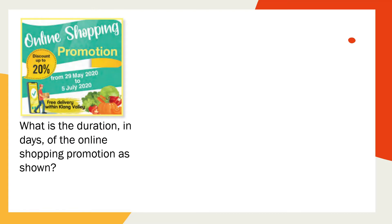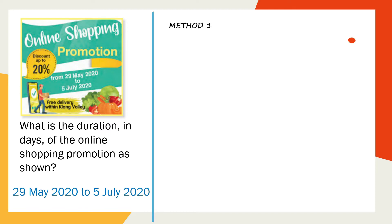Now let's see example two. What is the duration of the online shopping promotion as shown? Look at the diagram — the promotion is from 29th May 2020 to 5th July 2020, so it involves three months: May, June, and July.